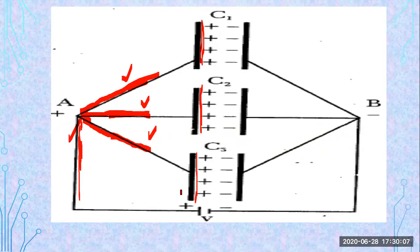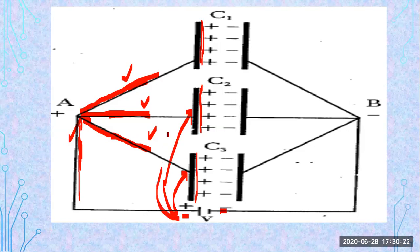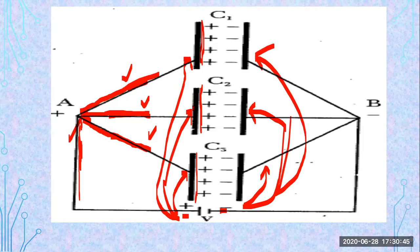What about the potential difference? The plates of all the capacitors 1, 2, and 3 are connected along the same potential. So all plates will have the same value of potential because they are connected along the same terminal. This plate carries potential plus, and the same potential applies to all the other capacitors. The charges will be different on each capacitor, but the potential is the same.